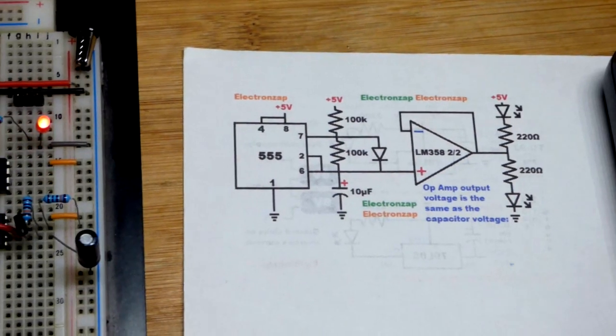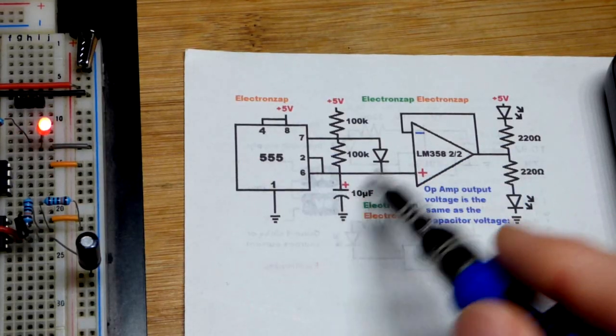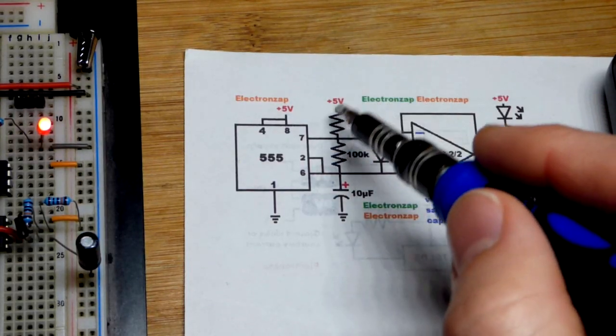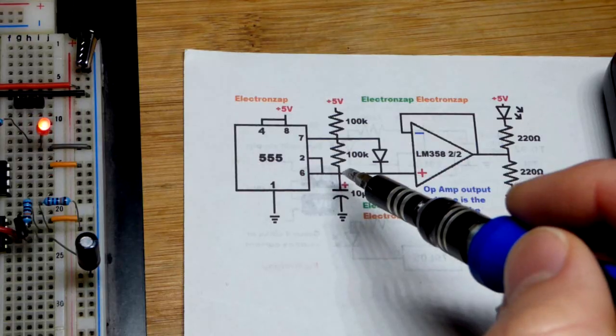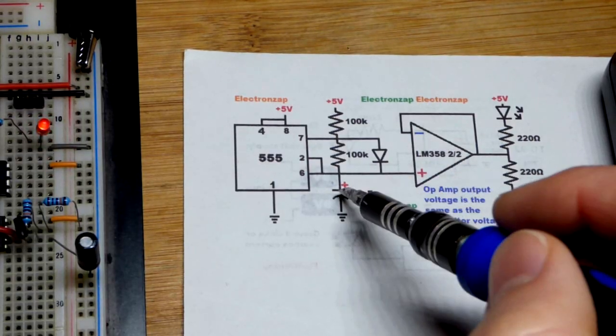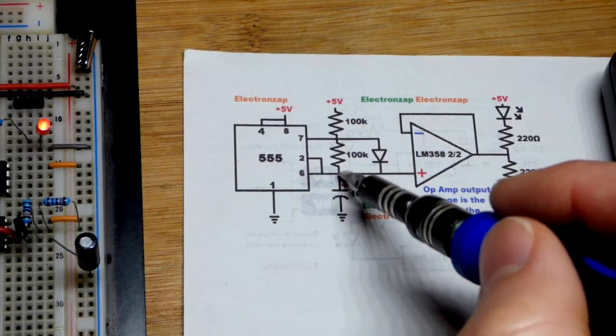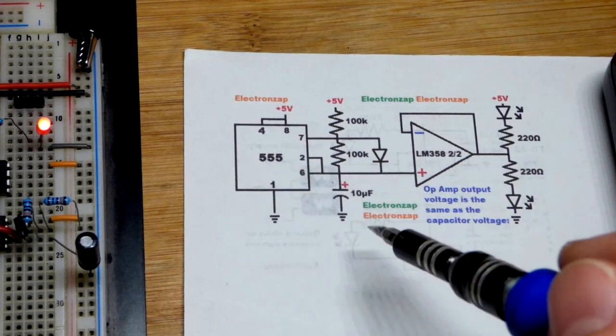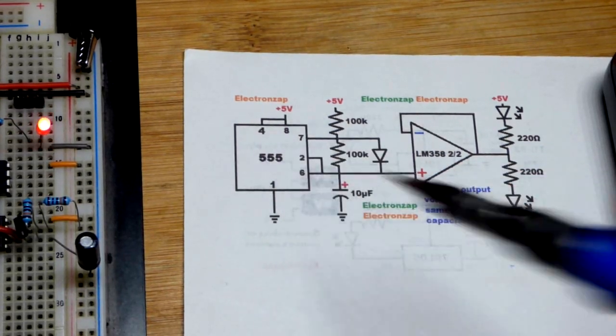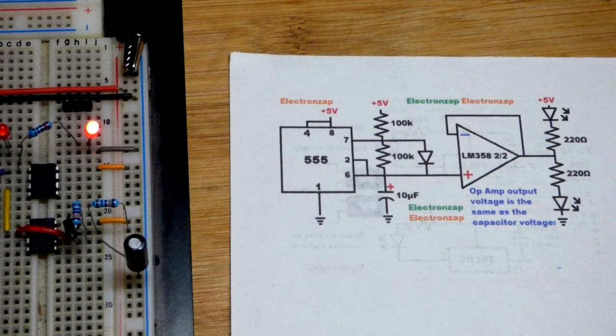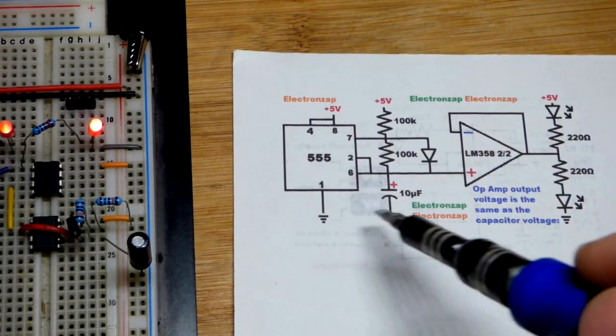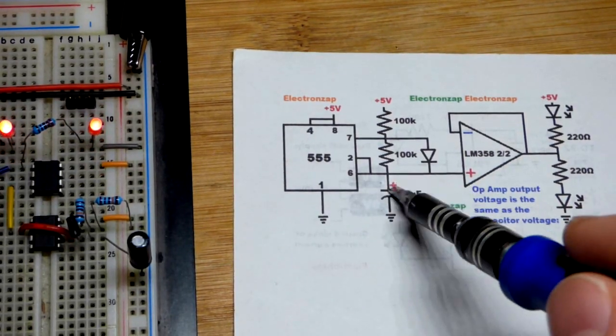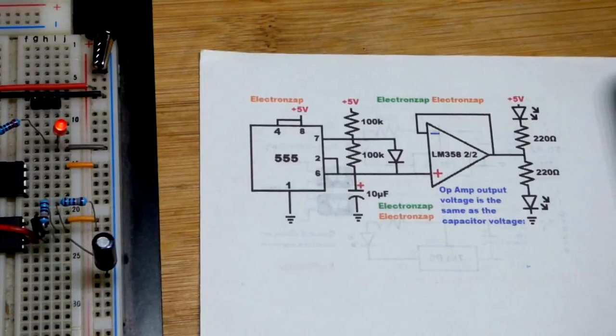The changing voltage is actually this capacitor, which cannot power the LEDs directly. That's why we have a voltage follower. As the capacitor charges, the voltage goes up, and as it discharges, the voltage goes down. We're not using the output of the 555 timer, pin three. We're just looking at the capacitor voltage.